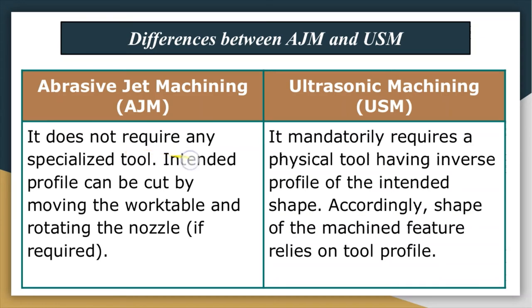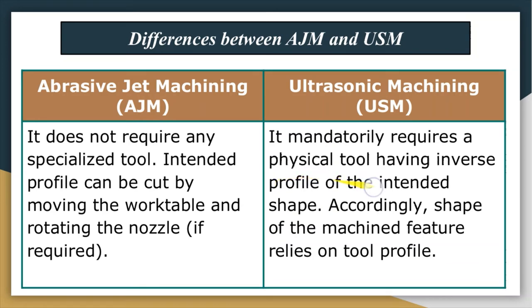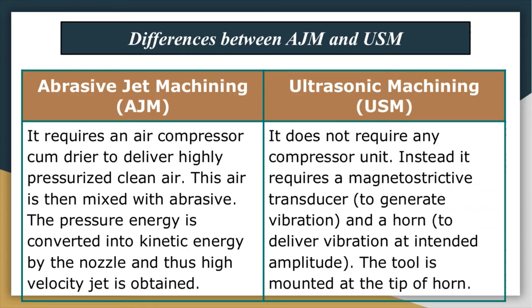In abrasive jet machining, no specialized tool is required — the intended profile can be cut by moving the work table and rotating the nozzle as required. But in ultrasonic machining, it is mandatory to have a physical tool with the inverse profile of the intended shape, and accordingly, the shape of the machined feature depends on the tool profile.